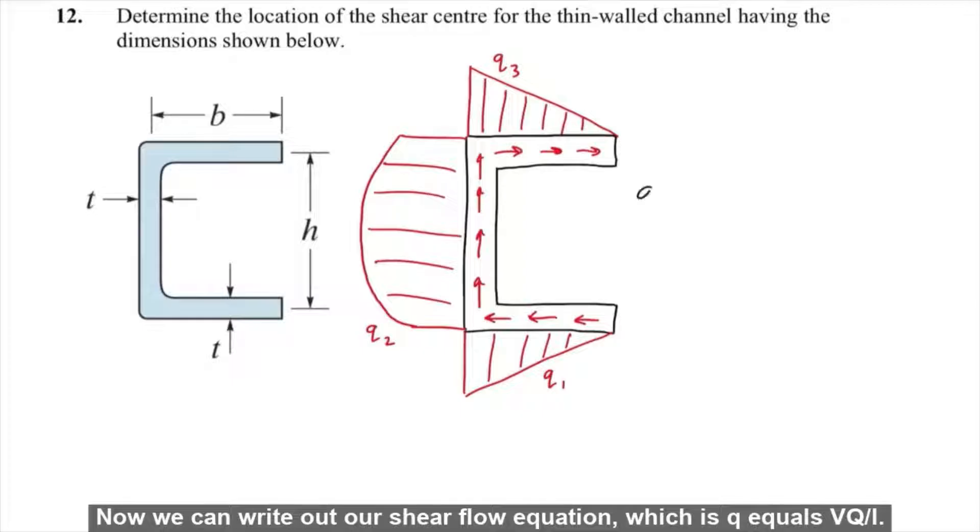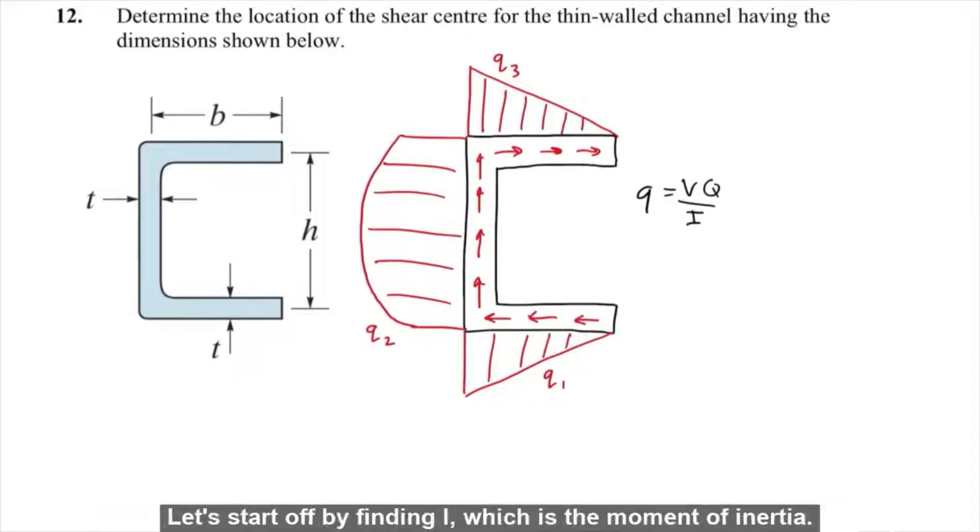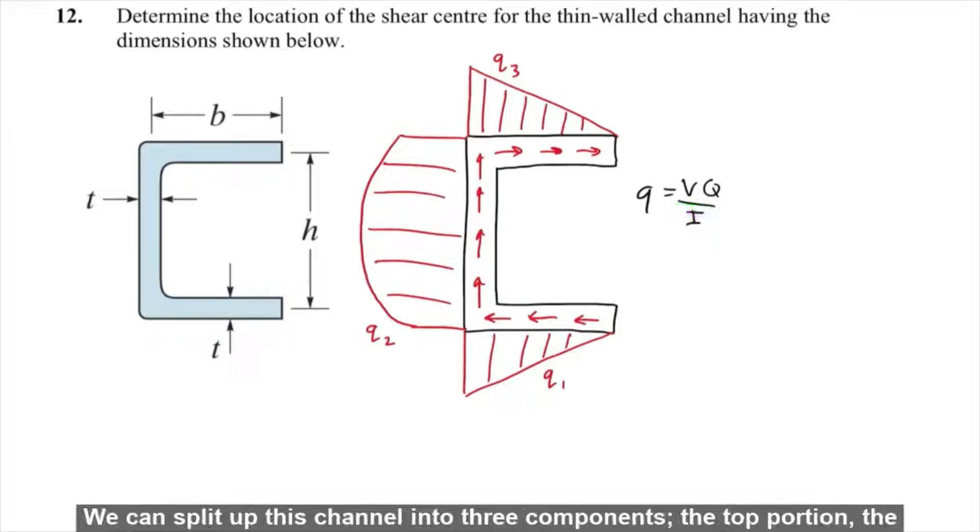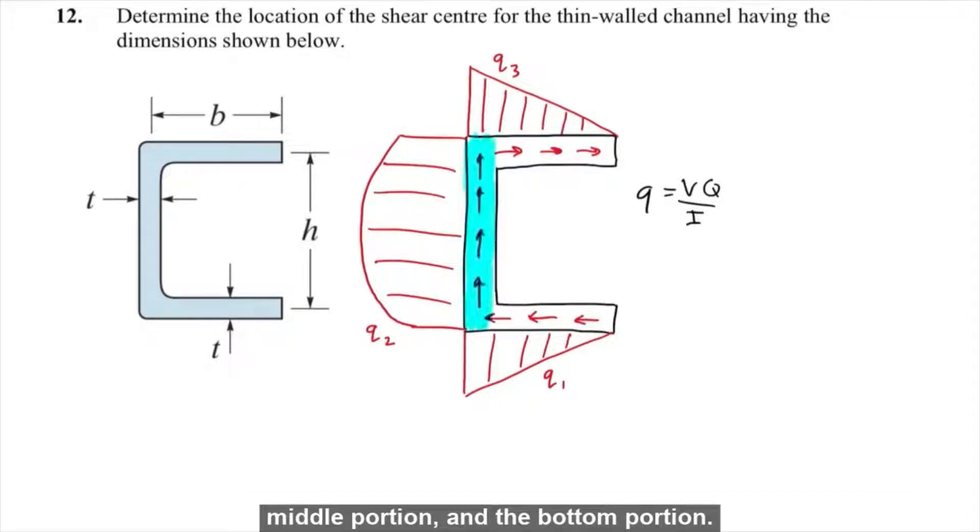Now we can write out our shear flow equation, which is Q equals VQ over I. Let's start off by finding I, which is the moment of inertia. We can split up this channel into three components: the top portion, the middle portion, and the bottom portion.